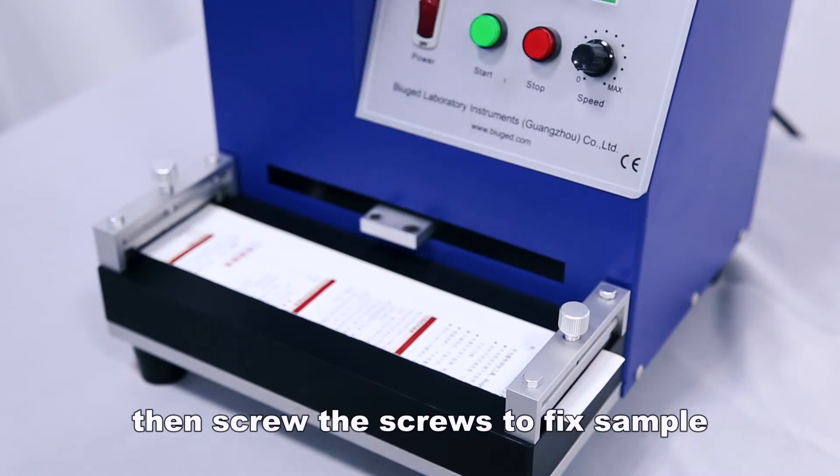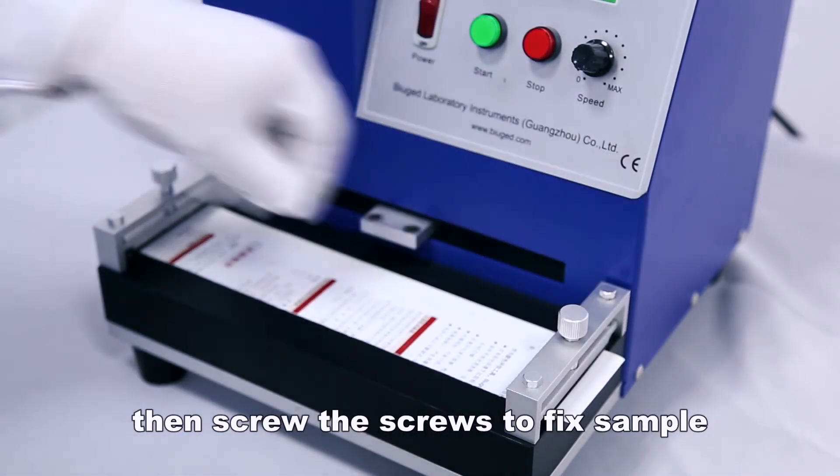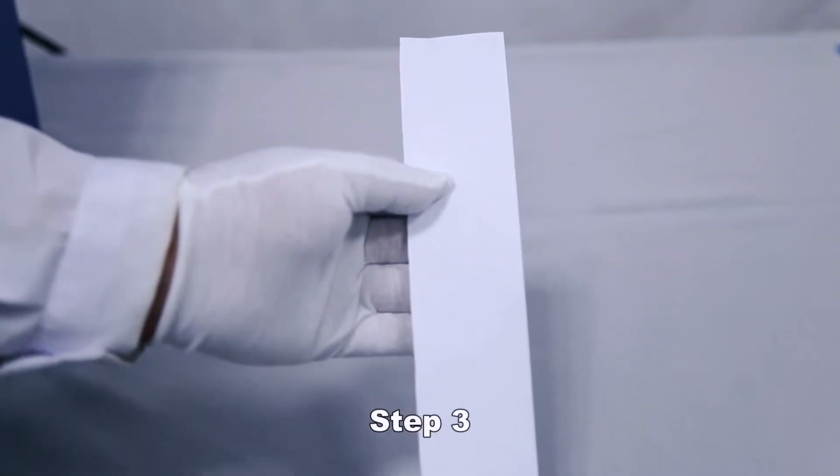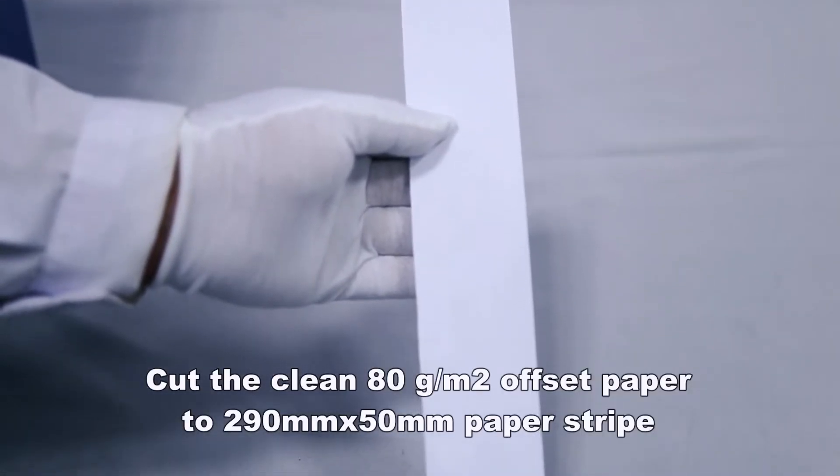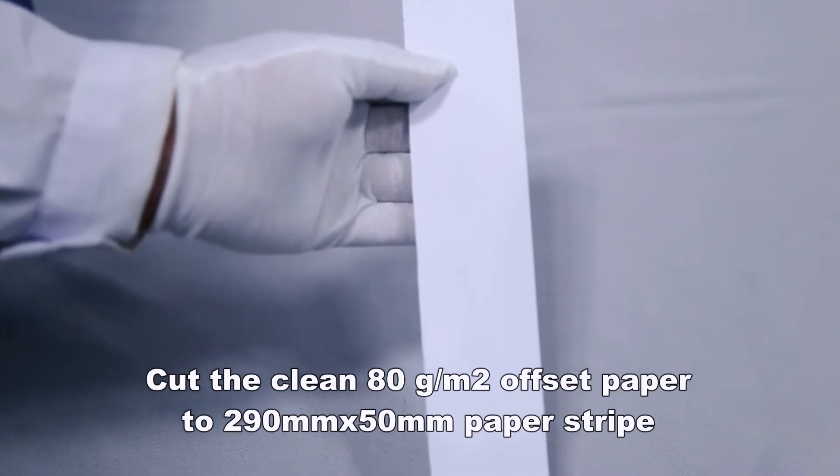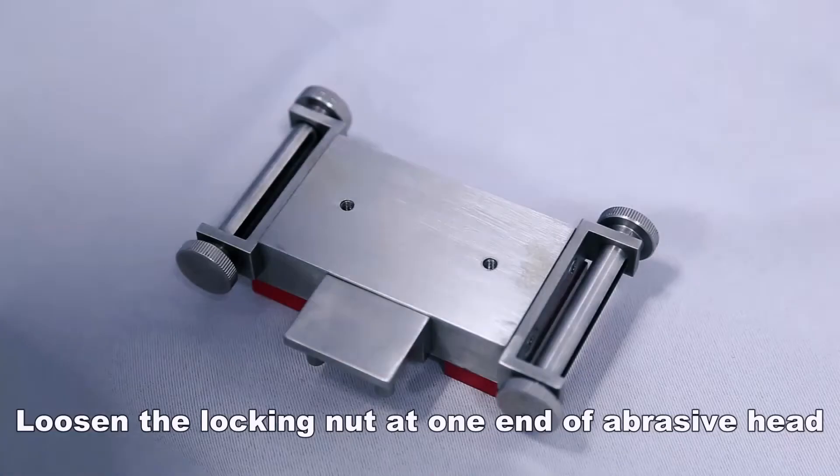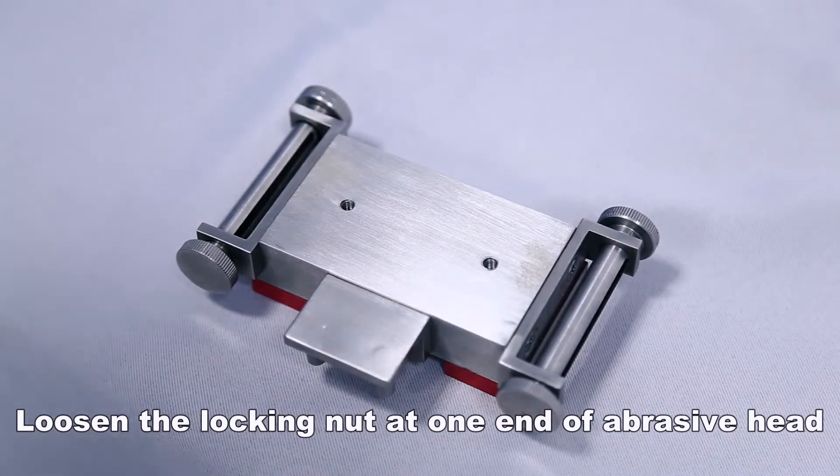Then screw the screws to fix the sample. Cut the clean 80 grams per square meter offset paper to 290mm x 50mm paper stripe, which will be used as abrasive medium. Loosen the locking nut at one end of the abrasive head.